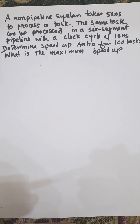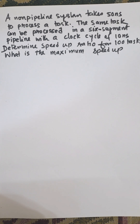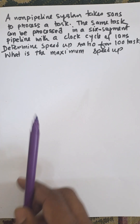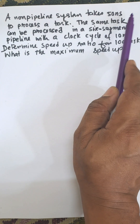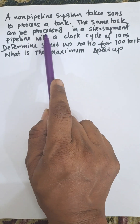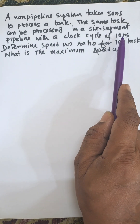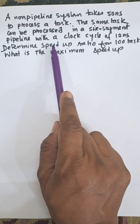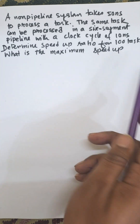In this video I am going to discuss speed up ratio calculation from the pipeline architecture, and the subject is computer architecture. A non-pipeline system has 50 nanoseconds to process a task, and the same task can be processed in a six-segment pipeline with a clock cycle of 10 nanoseconds. Determine the speed up ratio for 100 tasks and what is the maximum speed up.